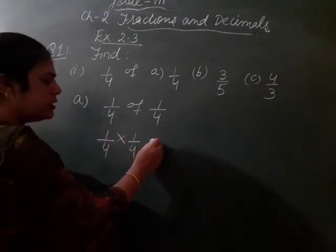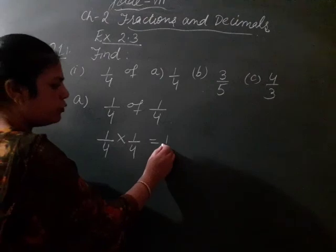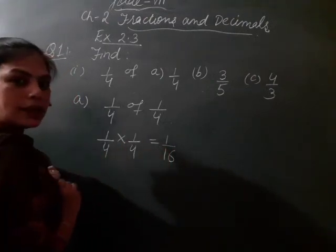Numerator, numerator multiply hoga: 1 times 1 is 1, 4 times 4 is 16. Clear?